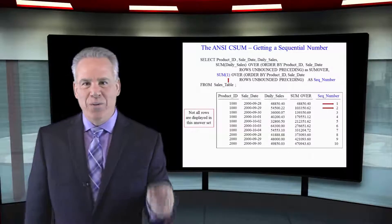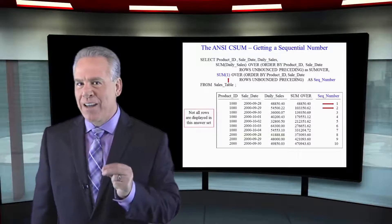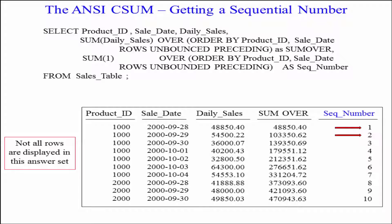We're back to do five columns on our report. We want to see the product ID, we want to see the sale date, we want to see daily sales, and we've got two ordered analytics. We're going to do our CSUM and then we're back to getting our sequential number.